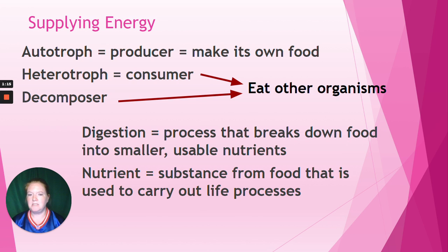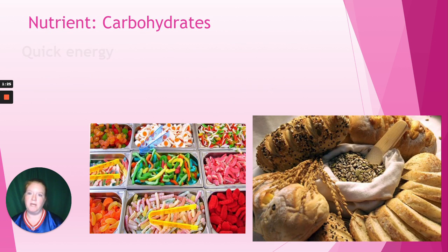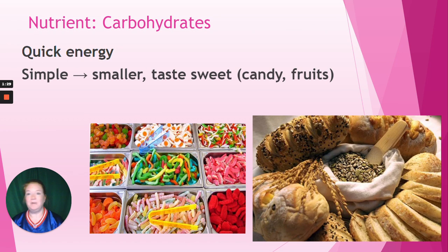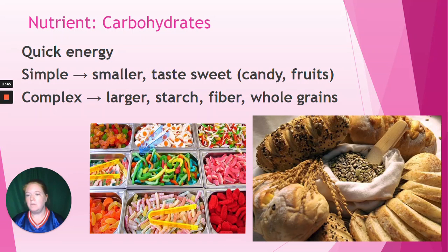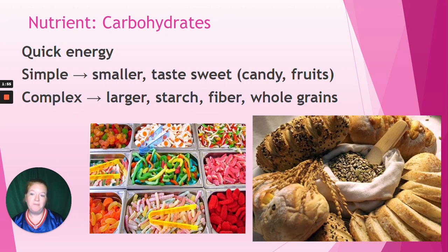A nutrient is the substance from food that is used to carry out life processes. The first category is carbohydrates — quick energy. Carbohydrates can be simple, so those molecules tend to be small, like glucose and fructose. They usually taste sweet, so think of things like candy, but also natural sugars like in fruit. Or carbohydrates can be complex — bigger molecules — and include things like starch in bread and potatoes, fiber, whole grains, and also the cellulose that makes up plant cell walls.